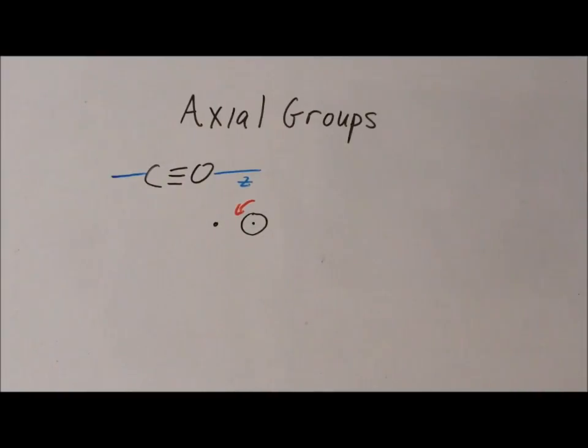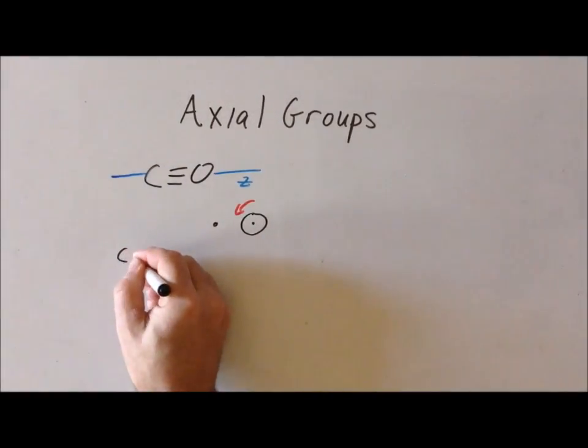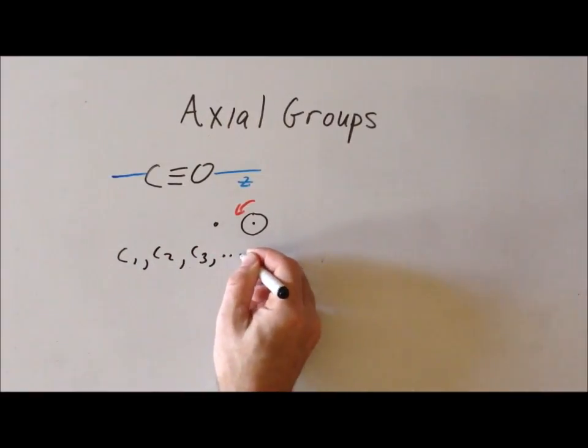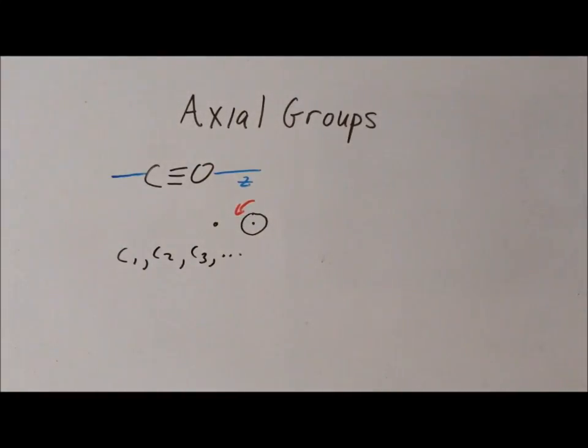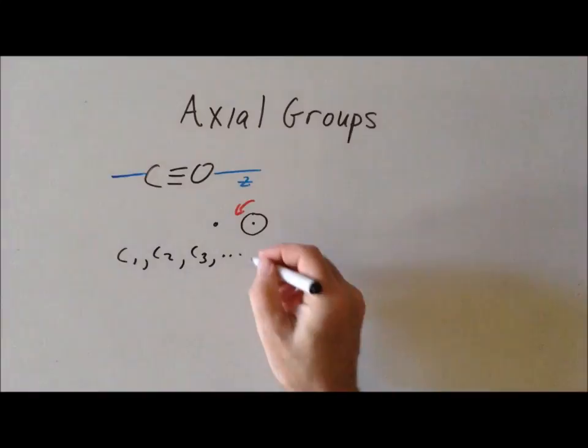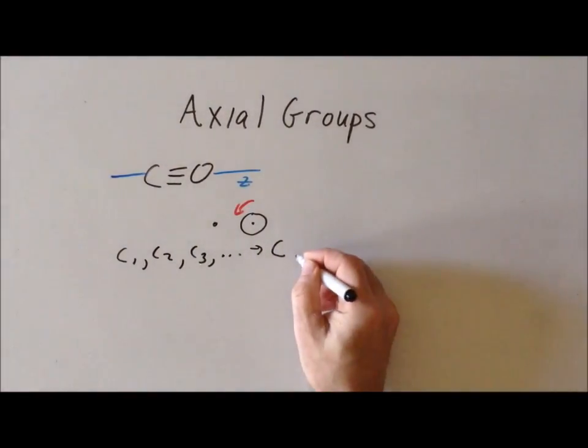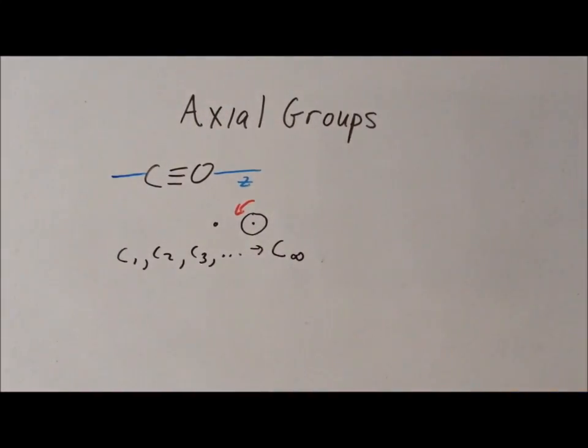Therefore, rather than write out the sequence of C1, C2, C3, write all those particular combinations out, since there are an infinite number, we somewhat abuse notation and we write this as a single high order rotation axis of C infinity. So C infinity means that any possibility of this will be a symmetry operation of the group. And we will only get this particular symmetry operation when we have a linear molecule.